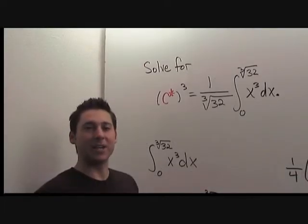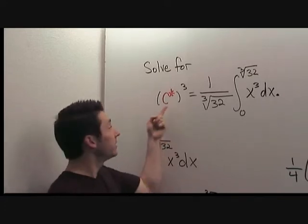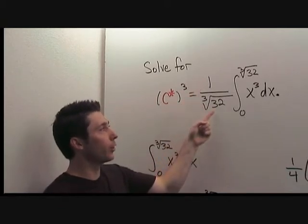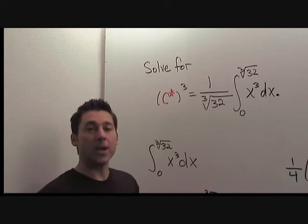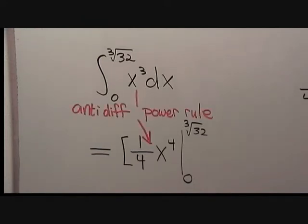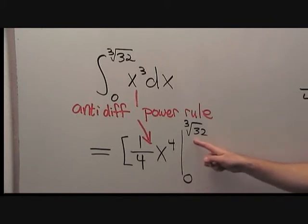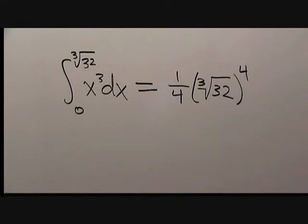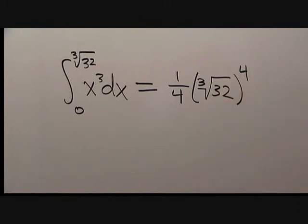Our answer for part a gives us the equation we need to solve for part b. Specifically, we need to solve for c star such that c star cubed equals 1 over the cube root of 32 times this integral. To make things easier, let's break it into pieces and compute the integral first by itself. To compute the integral of x cubed, we need to anti-differentiate using the power rule. Therefore, our integral will be 1 fourth times x to the fourth, and then we take the difference from x equals 0 to x equals the cube root of 32. Therefore, our integral is 1 fourth times the cube root of 32 to the fourth power. In this problem, it will be useful not to simplify too much, so we will leave this expression as it is.